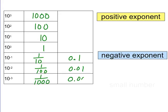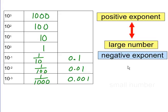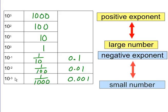What do we notice about the exponents? When we have positive exponents we tend to have larger numbers, and when we have negative exponents we tend to have smaller numbers. As the exponent went negative, our numbers got smaller and smaller; as the exponent grew positive, our numbers got larger and larger.